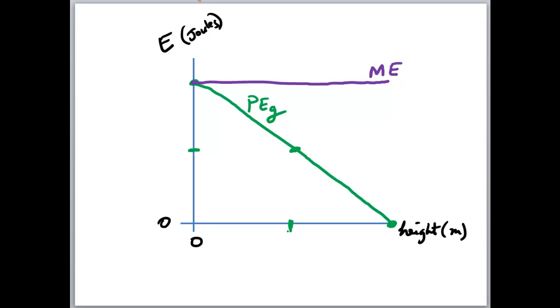How would the kinetic energy look on such a graph? At the top, initially, point A, the marble's not moving. Kinetic energy is zero. Now, how would we graph a line such that potential energy, which is in green, plus kinetic energy, which is going to be in red, is equal to the mechanical energy, which is shown in purple?